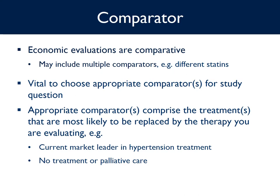Appropriate comparators comprise the treatments that are most likely to be replaced by the therapy that you are evaluating. For example, we should use the current market leader in hypertension if we are analysing the first new line of treatment for hypertension, or no treatment or palliative care if we are looking at a condition for which most patients receive no therapy or there is currently no treatment available.